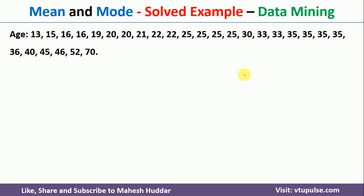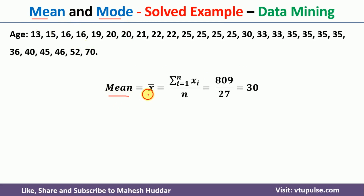Now we will try to understand how to find mean and median of that particular data. If you want to find the mean, we need to use the equation: mean, denoted by x-bar, is equivalent to the summation of all ages divided by the total number of values. That is 13 plus 15 plus 16 and so on, divided by 27. If you add all those values, you get 809 divided by 27, which gives 30. So 30 is the mean age of this particular data.